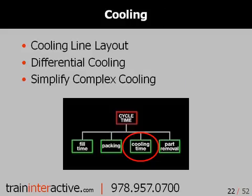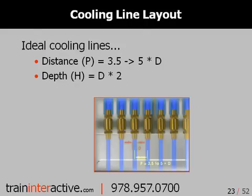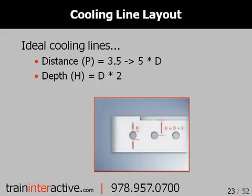When we discuss cooling time, we're concerned about cooling line layout, differential cooling, and how to simplify a complex cooling situation. When laying out cooling lines, we typically focus on standard size diameters and space them 1.5 to 5 times the diameter. Spacing the lines more than 5 times the diameter can cause differential cooling and shrinkage. Placing them more closely together will not significantly improve the effectiveness of the cooling system and may affect the structural integrity of the mold. The more effective water line depth is typically 2 times the water line diameter — close enough to provide adequate cooling while avoiding hot and cold spots near the mold cavity or core.